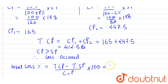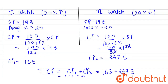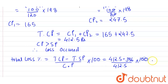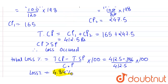Loss% = ((Total CP − Total SP) / Total CP) × 100 = (412.5 − 396) / 412.5 × 100 = 4.84%. Since we confirmed it is a loss, the loss percentage is 4.84%.